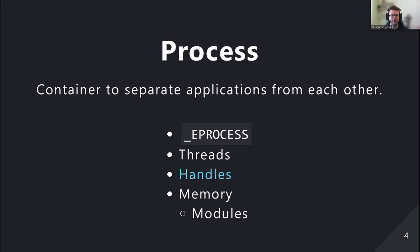The first concept I want to cover is the process. A process is a container that separates applications from each other. There's a data structure in the Windows kernel called _EPROCESS, which is the kernel-side representation of a process. A process contains threads for code that needs to run, handles — which are the Windows equivalent of file descriptors on Linux — memory, modules or shared libraries (DLLs), and the executable code.